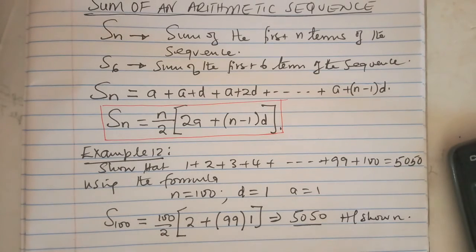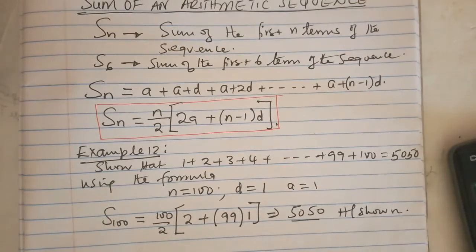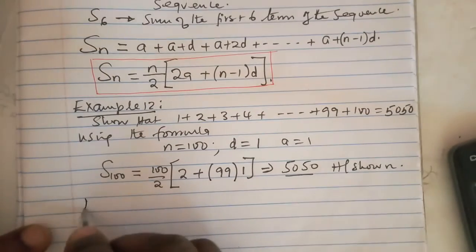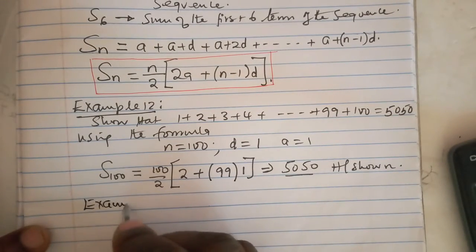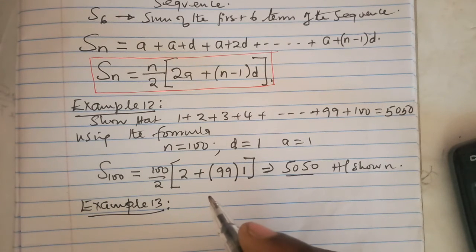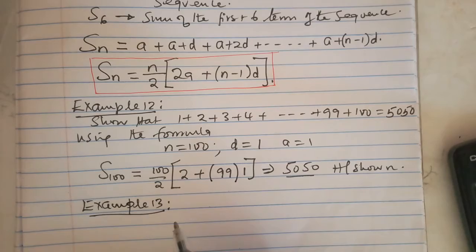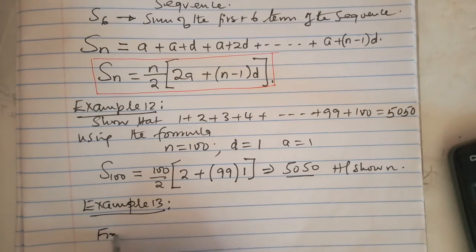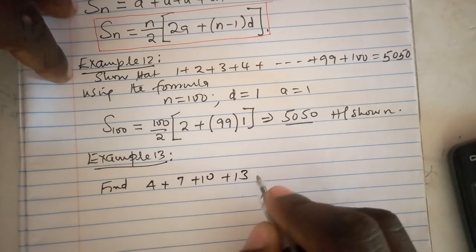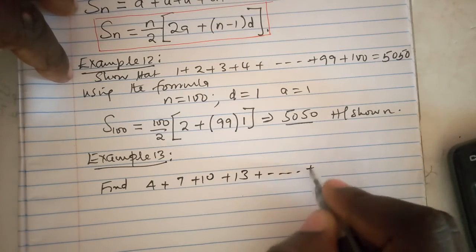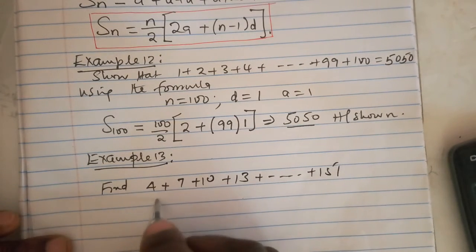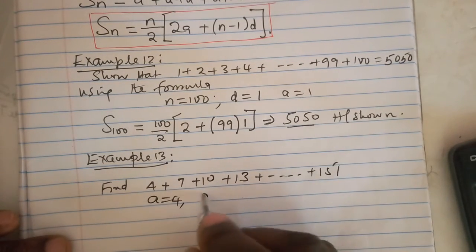I want us to go to example 13 and understand something. Find 4 plus 7 plus 10 plus 13 plus all the way plus 151. The last term is 151. We have to note that a is 4, d is 3 because the difference is 3.